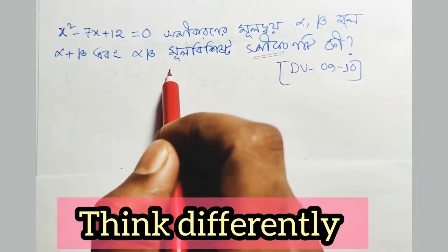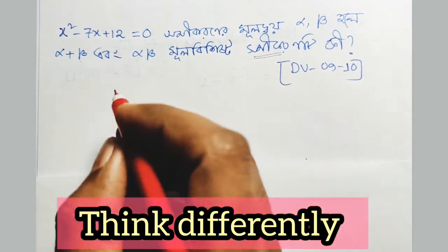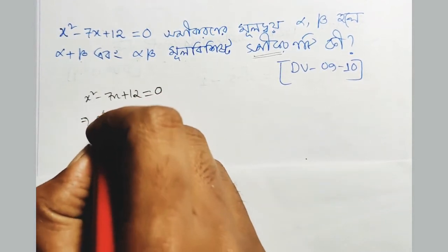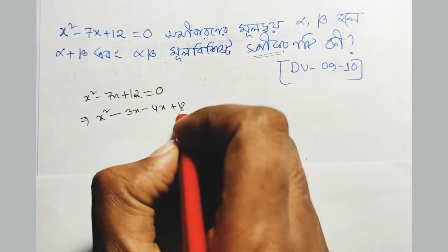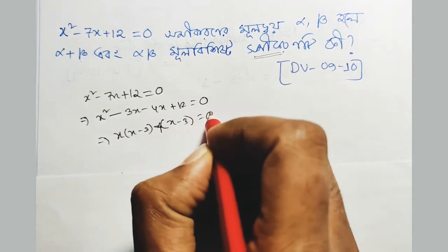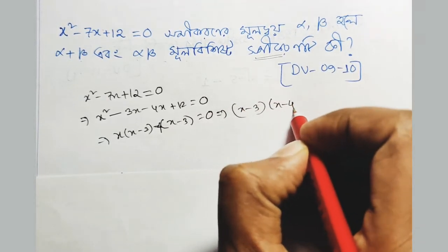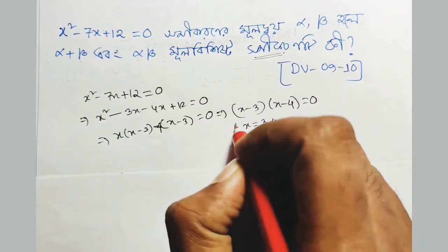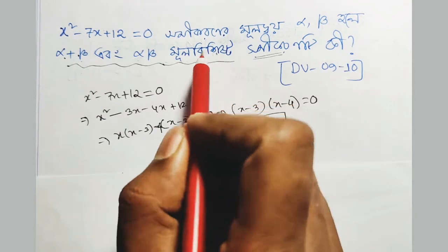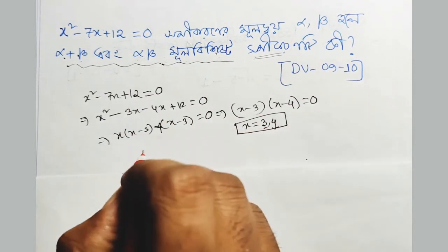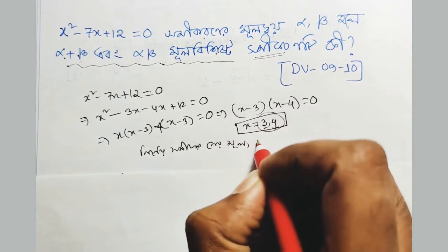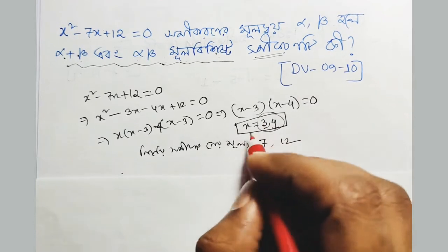Take this example: x² - 7x + 12 = 0. We can factor this as (x - 3)(x - 4) = 0, so x equals 3 or 4. Therefore, alpha and beta are 3 and 4. Alpha plus beta equals 7, and alpha times beta equals 12.